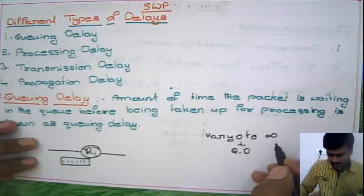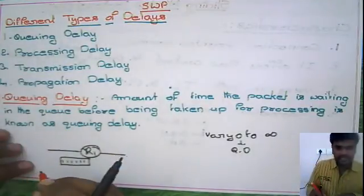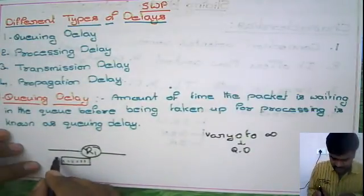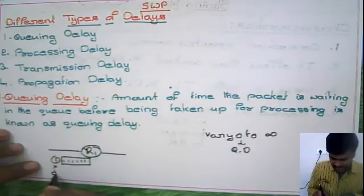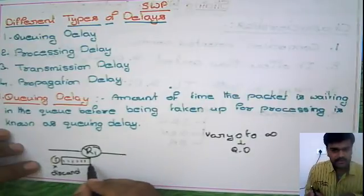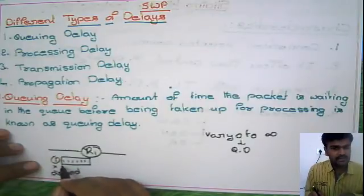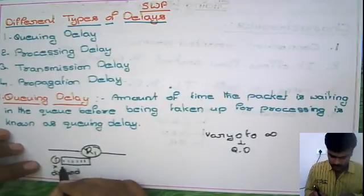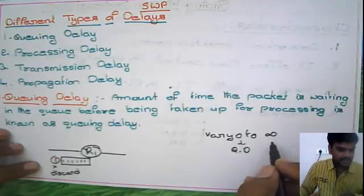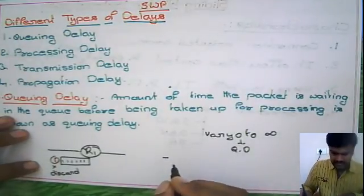When is queuing delay infinity? Suppose the router is busy with other packets and the buffer is full. Whenever a new packet arrives, the only option is to discard that packet — there is no space in the buffer. The router will send an acknowledgement back to the source. In that case, that packet's waiting time is infinite.